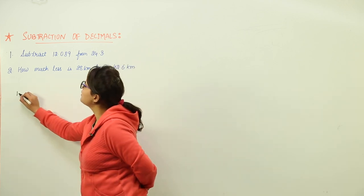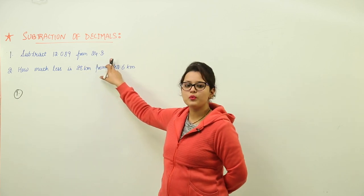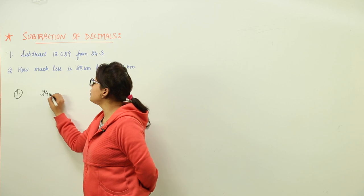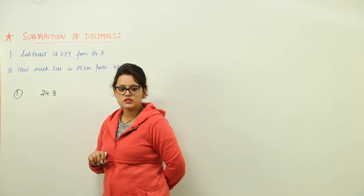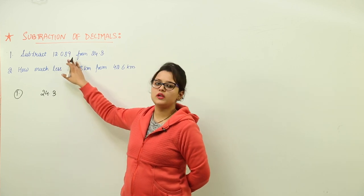The first one is that we have to subtract 12.089 from 24.3. So what we will do? We will write 24.3 first and what do we have to subtract from this? 12.089.